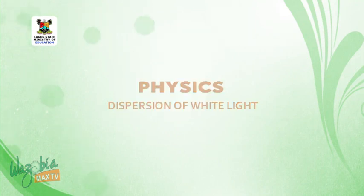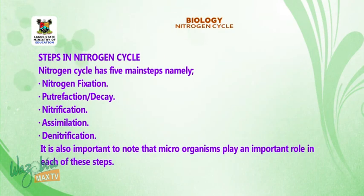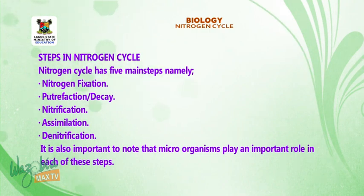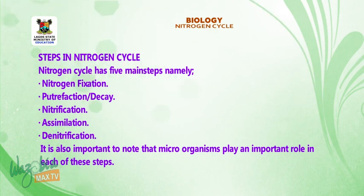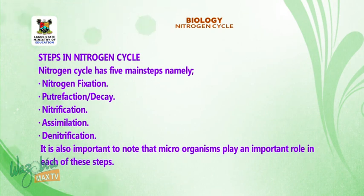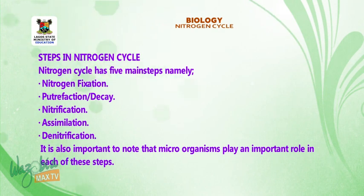Welcome back. Steps in nitrogen cycle. The nitrogen cycle has five main steps, namely: nitrogen fixation, putrefaction or decay, nitrification, assimilation, and denitrification. It is also important to note that microorganisms play an important role in each of these steps.